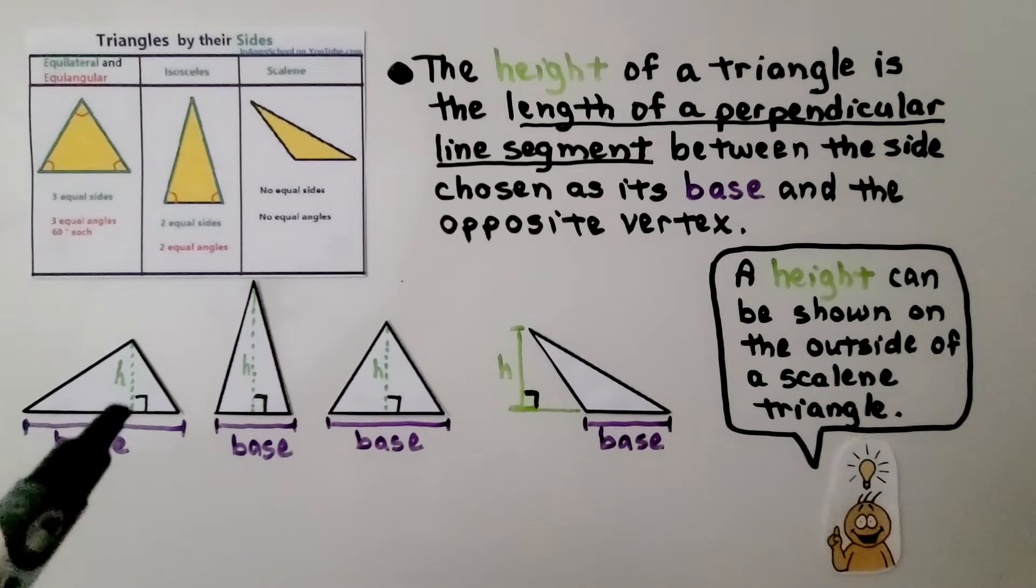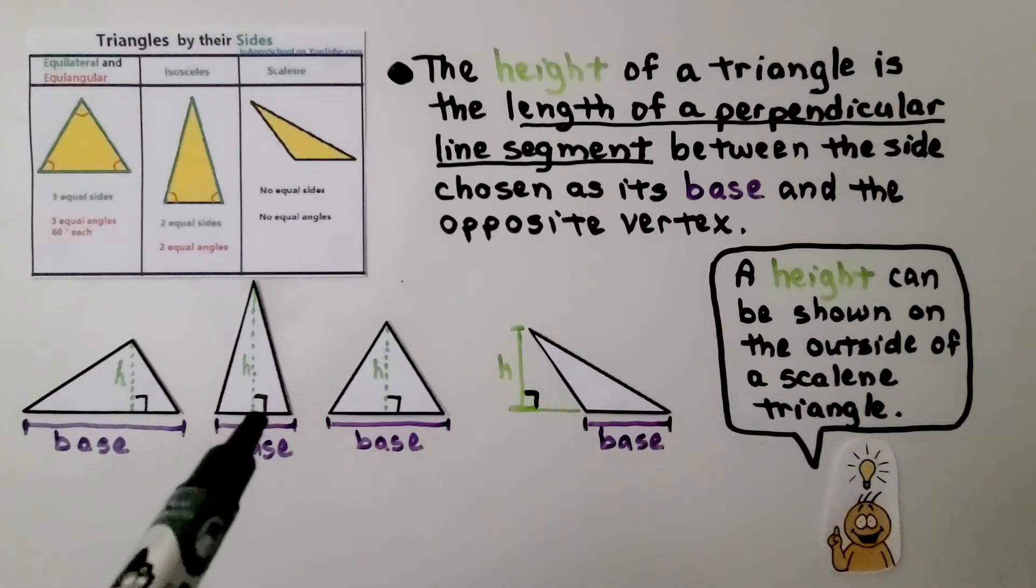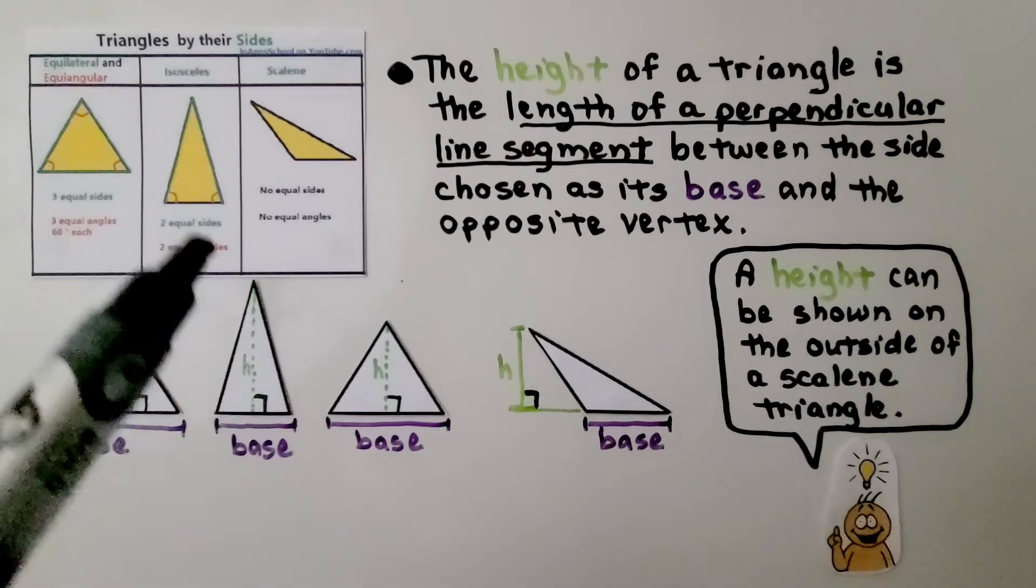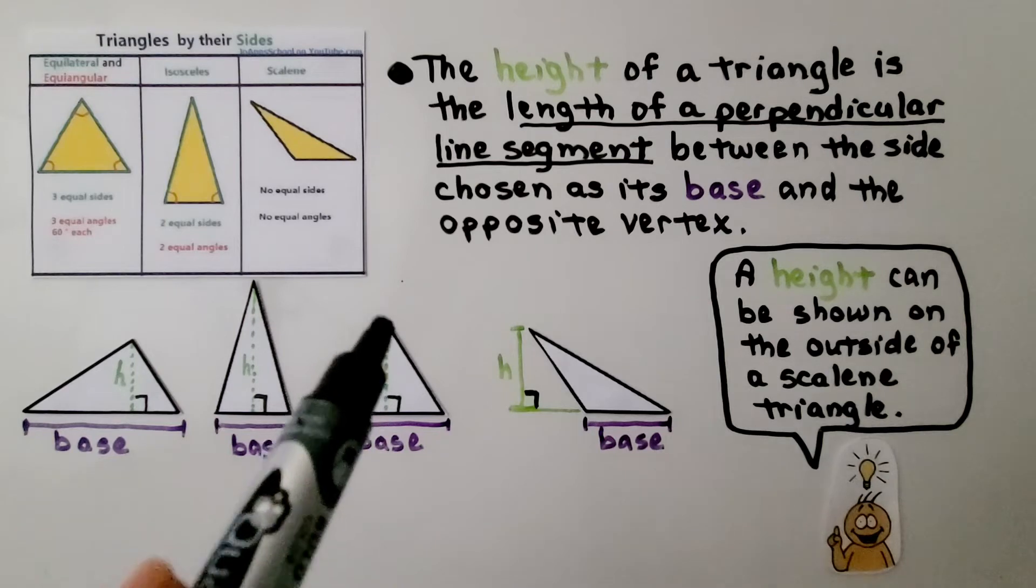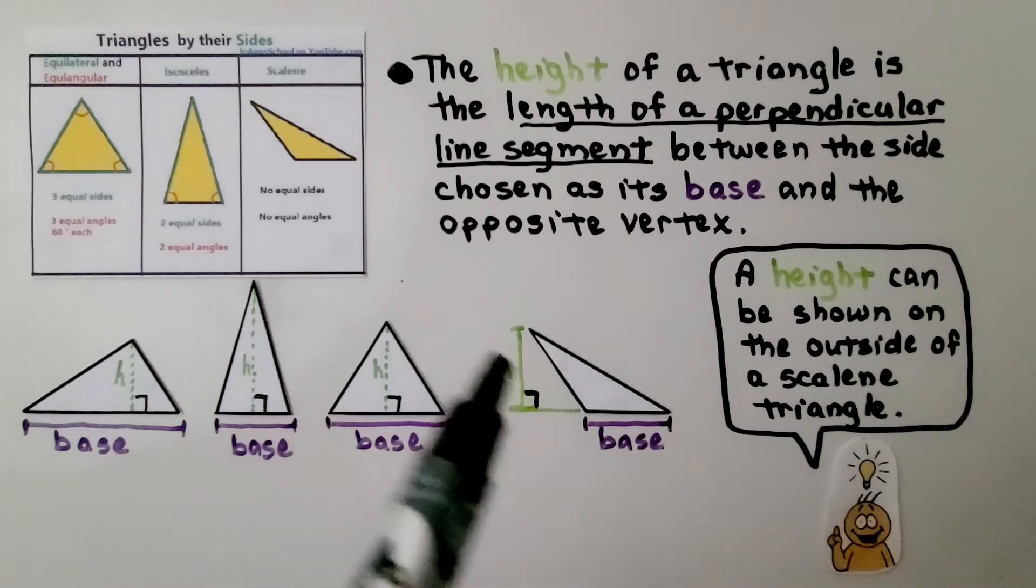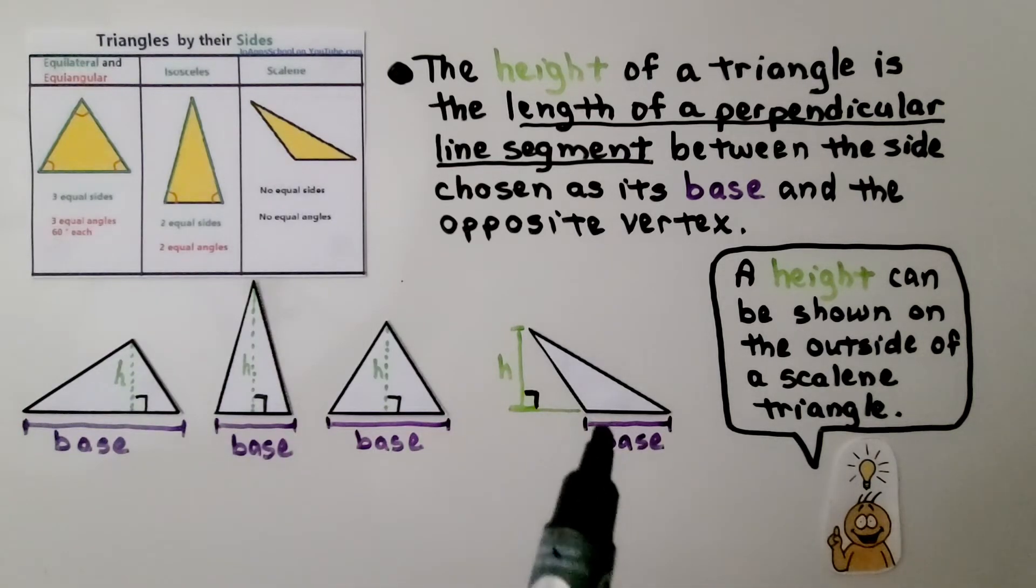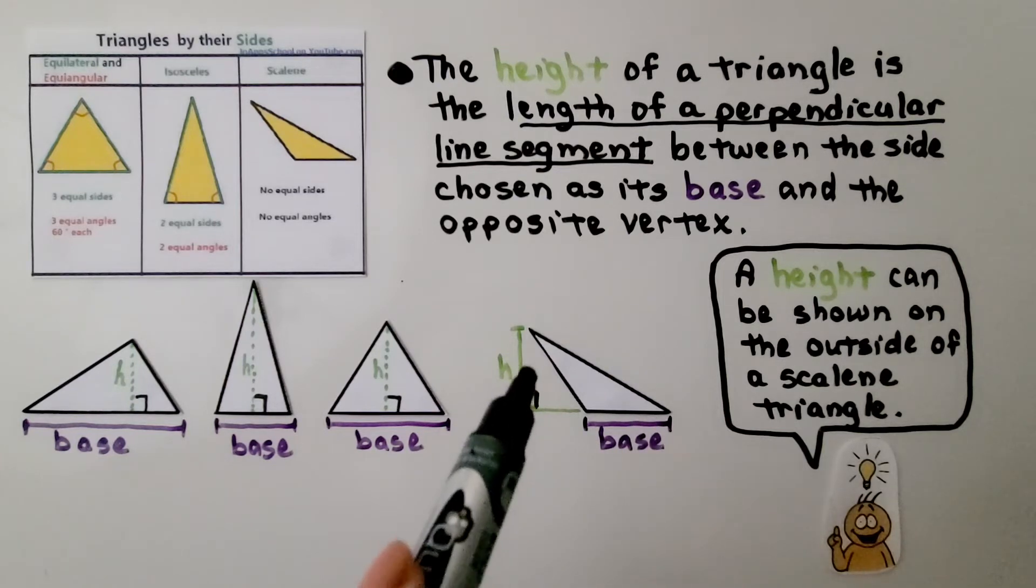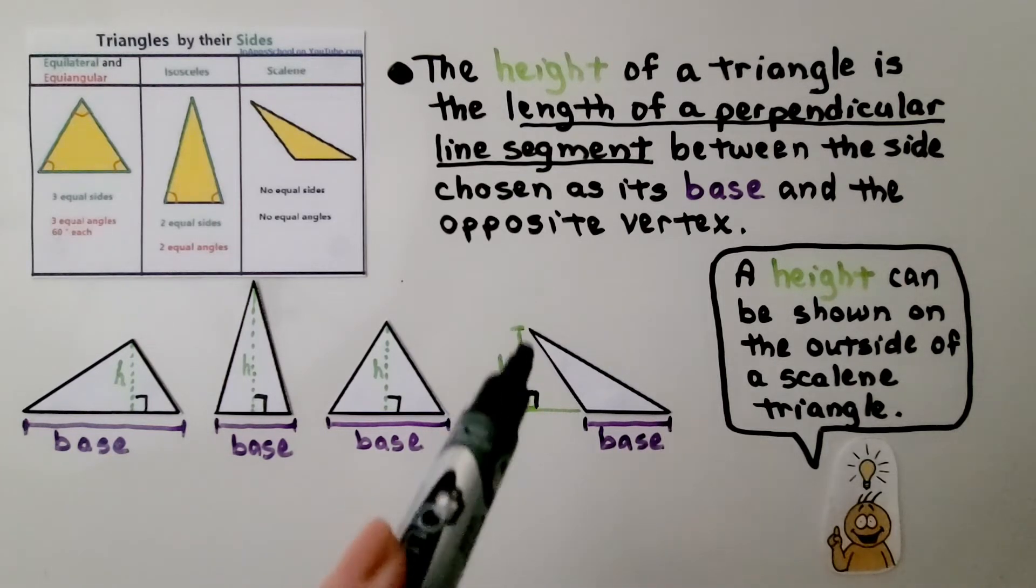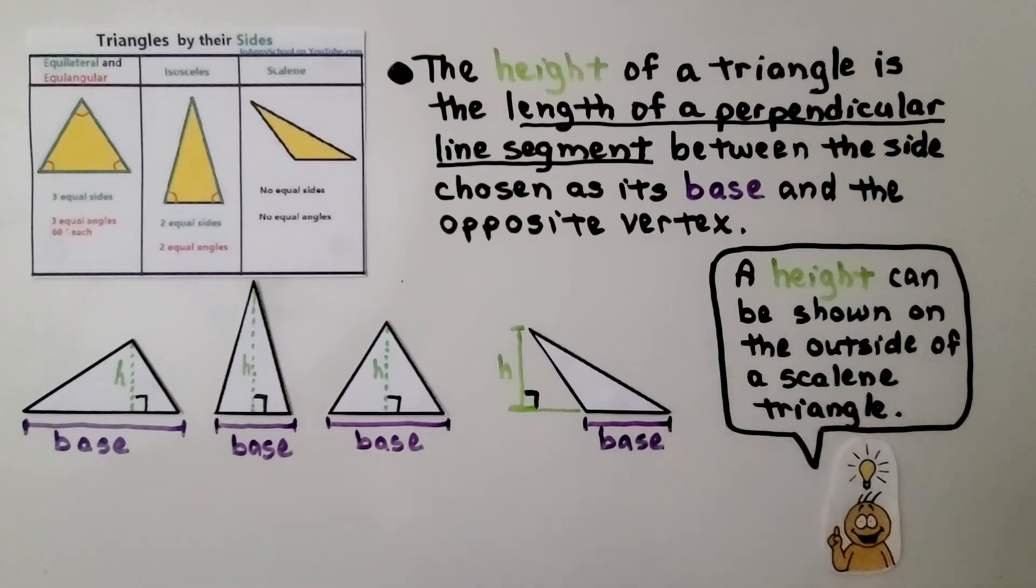So for this triangle, here's the height. For this triangle, that's an isosceles one, isn't it? Here's the height. Here's an equilateral triangle. Here's the height. And we can see this is a scalene triangle. All three sides are different lengths. The height can be shown on the outside of a scalene triangle. So we extend the base out and then we make our perpendicular line going straight up and that's the height.